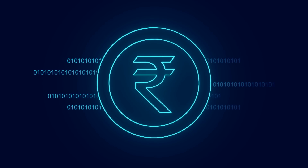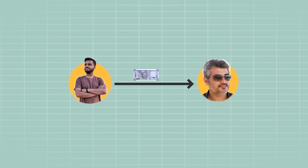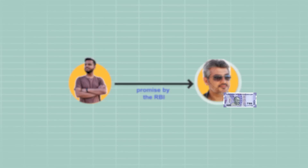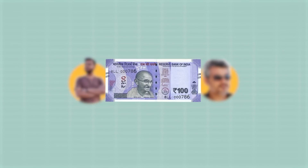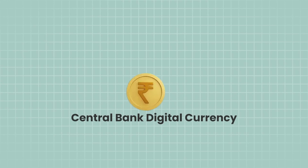The first thing we need to understand is the basic concept of money and where CBDC fits among all other forms of instruments in modern day society. When Shubham gives Ajit a note of 100 rupees, what he's really giving Ajit is a promise by the RBI to pay Ajit, who's the bearer of the note, 100 rupees. So the 100 rupee note is a legal tender, which means it can be used to pay for any transaction in India. CBDC does the exact same thing, but in the digital format.